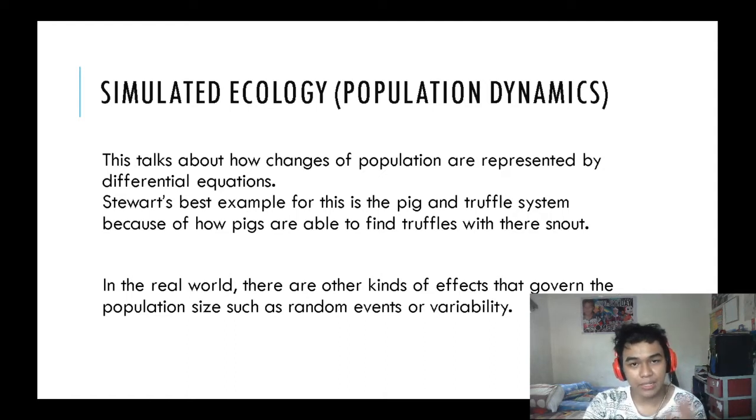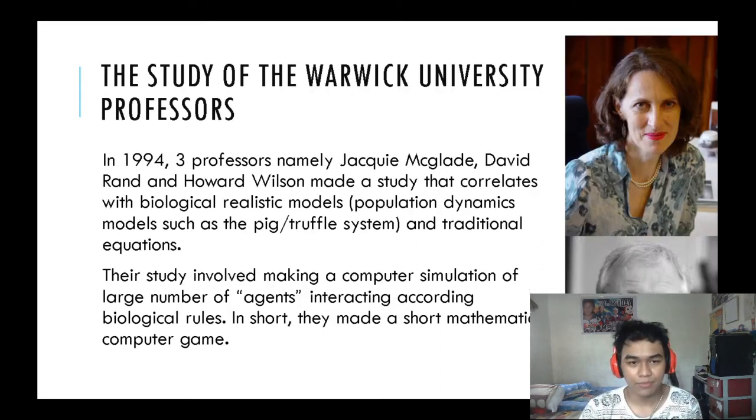According to Ian Stewart, the best example he can find is the pig and truffle system. The ecosystem has this thing called systematic connection in which a pig tries to find a truffle, the same as how animals find their prey. In that case, population has changed through that action.